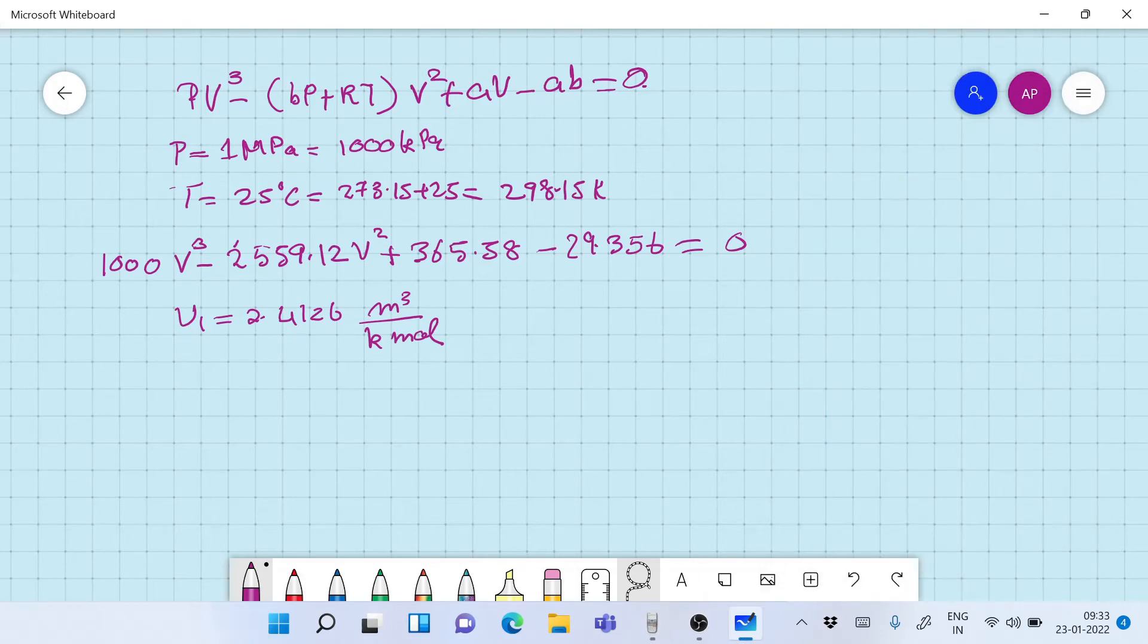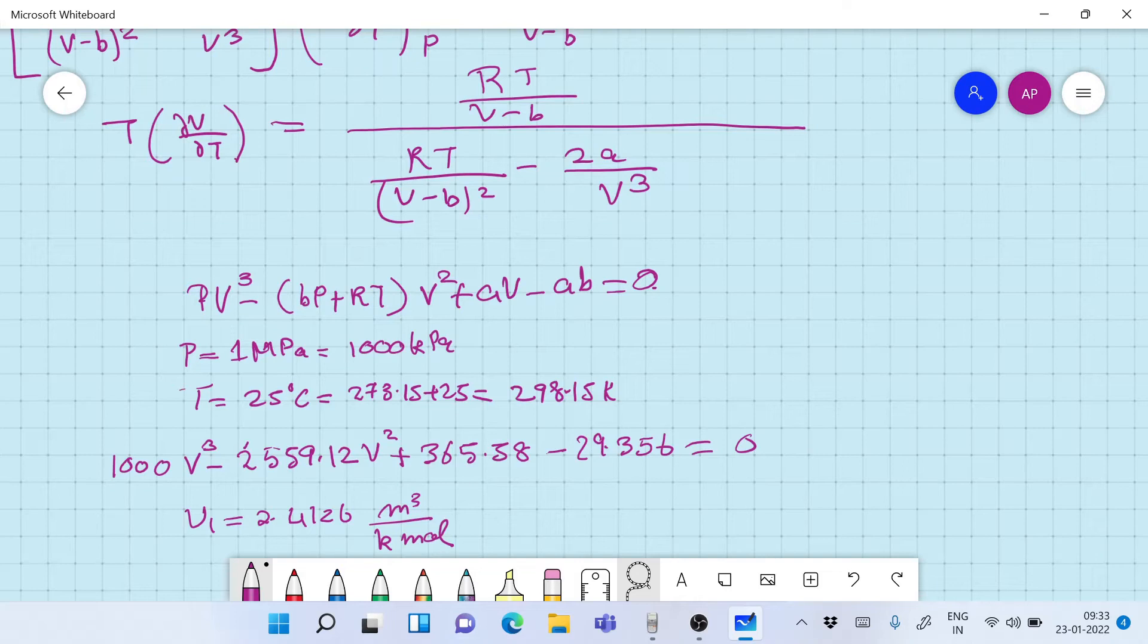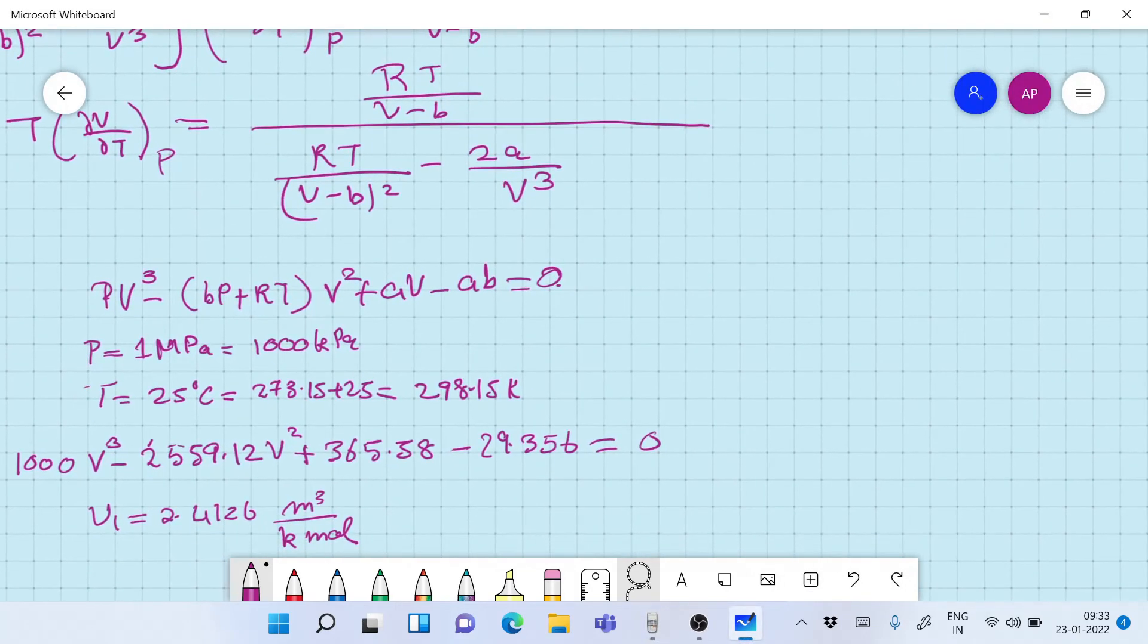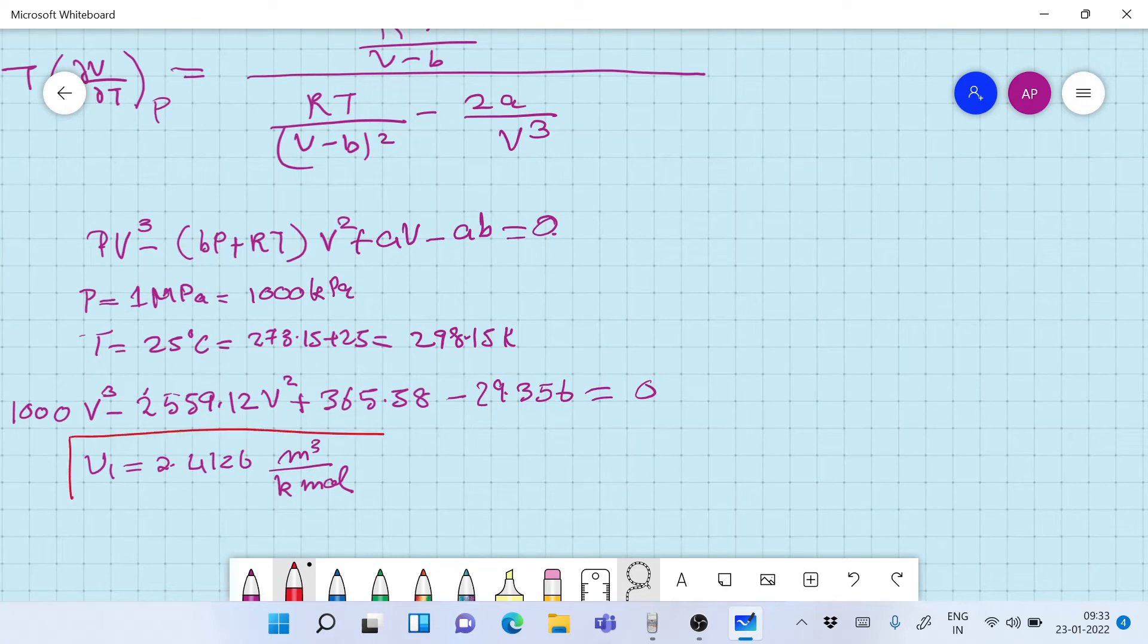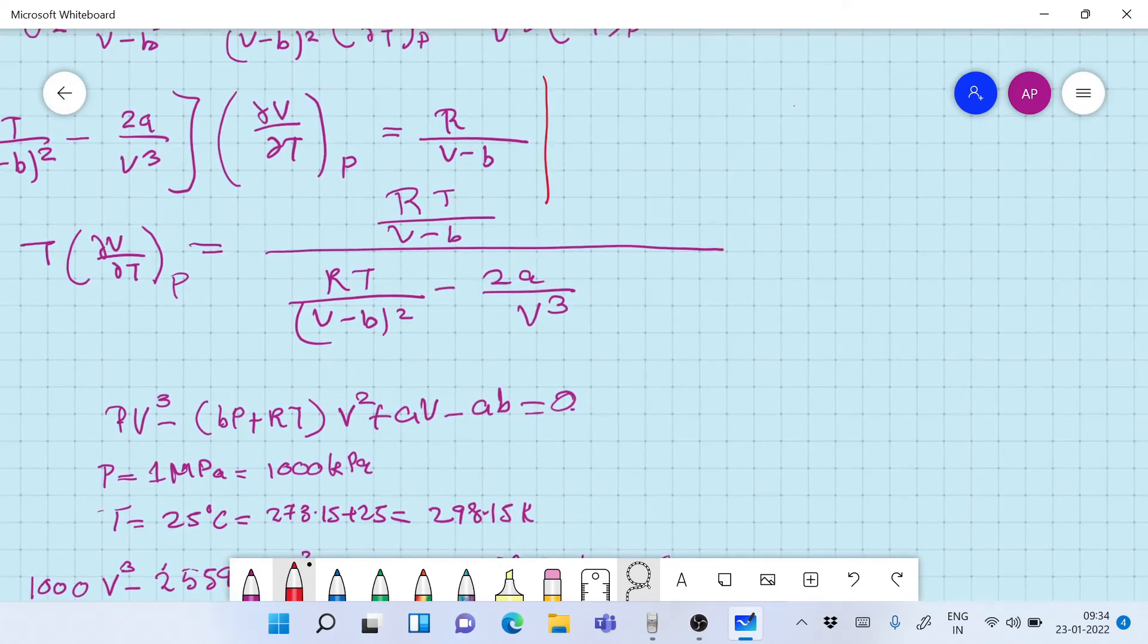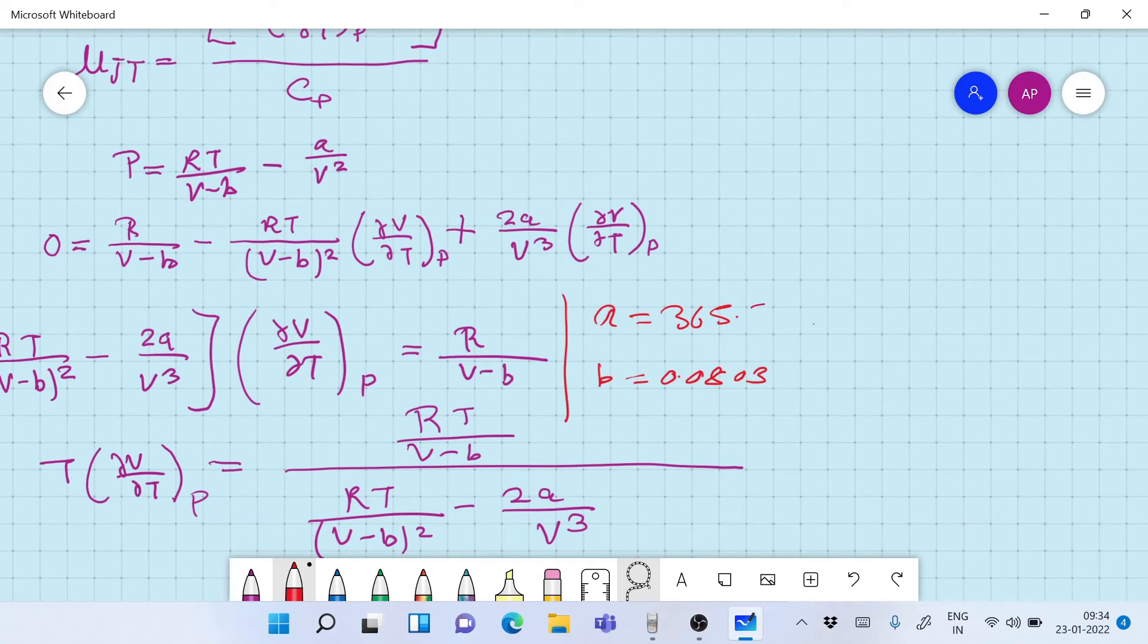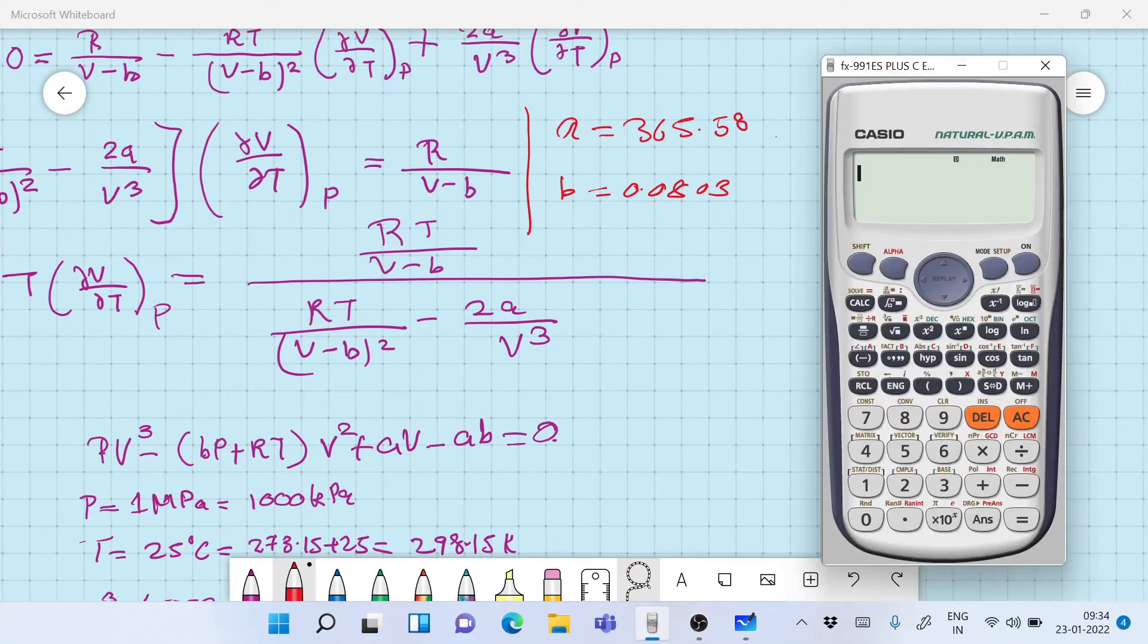So we have one real volume here. So now we have the volume, the temperature, and the pressure, and we can calculate the expression. So let's get ahead with calculating the expression of T ∂V/∂T at constant pressure P. So it would be good to mark the values once. And in this expression, the value of A is 365.58 and B is 0.0803, just to make a note so that it gets easier in calculation.